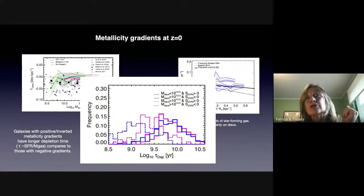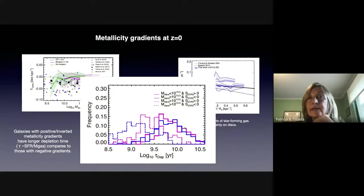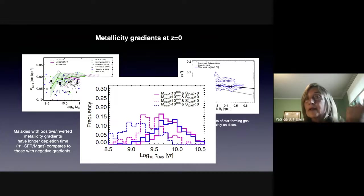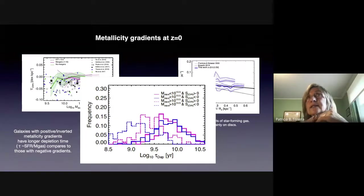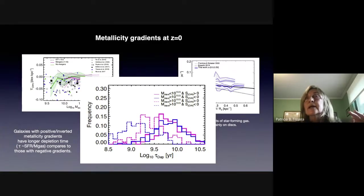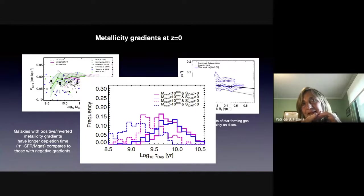We also explored the depletion time — the rate at which gas is consumed in galaxies with positive and negative metallicity gradients. For low mass galaxies with less than 10^5 solar masses, we found that galaxies with inverted metallicity gradients are consuming their gas more slowly and on longer timescales than those with negative metallicity gradients. This suggests that galaxies that keep their negative metallicity gradient are the ones that still have gas and are continuously forming stars, giving shape to these negative profiles.